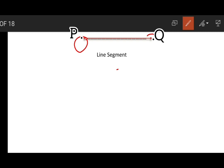In this case, point P and point Q are two fixed points. It shows its limit. When both the ends are fixed, then it is a line segment.